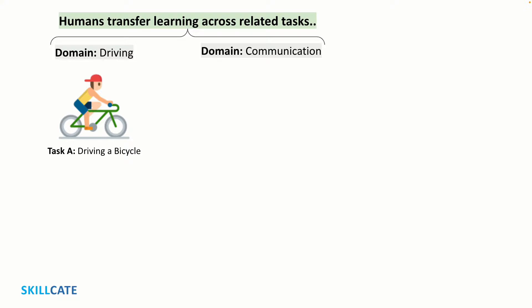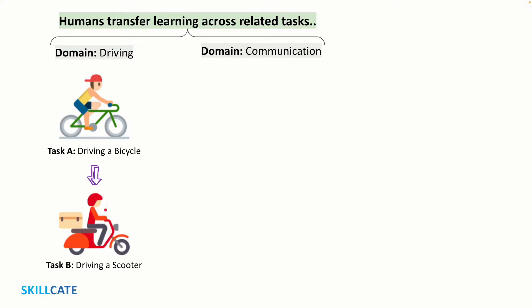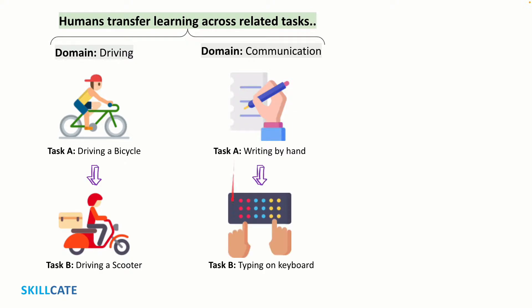As humans, we have this inherent ability to transfer knowledge across tasks. What we acquire as knowledge while learning about one task, we utilize it further to expedite learning new but related tasks. For example, if you already know how to ride a bicycle, you can learn how to drive a motorcycle more easily with some fine-tuning on controlling the engine power. Or if you know how to write by hand, you can learn how to type from the keyboard by fine-tuning your brain to learn the location of the keys. So it's quite evident that as humans, we do not learn everything from scratch when attempting to learn a new task or skill. Rather, we transfer or leverage our knowledge from what we have learned in the past. And that's precisely what transfer learning is in the context of us humans.